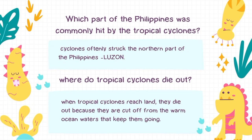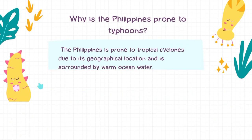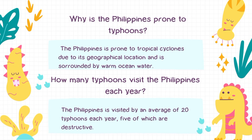Which part of the Philippines is commonly hit by tropical cyclones? Cyclones often strike the northern part of the Philippines — Luzon. Where do tropical cyclones die out? When tropical cyclones reach land, they die out because they are cut off from the warm ocean waters that keep them going. The Philippines is prone to typhoons due to its geographical location and being surrounded by warm ocean water, and is visited by an average of 20 typhoons each year, 5 of which are destructive.